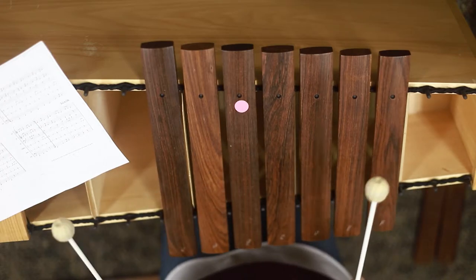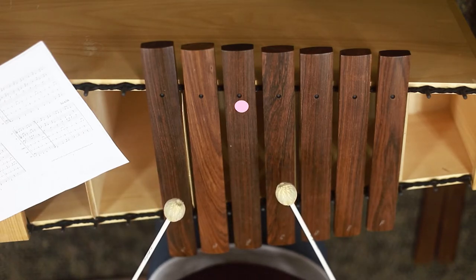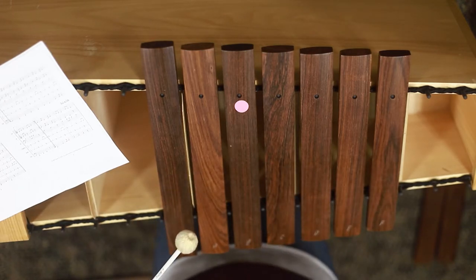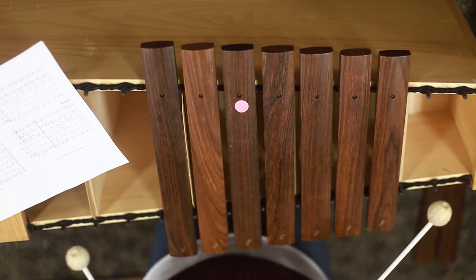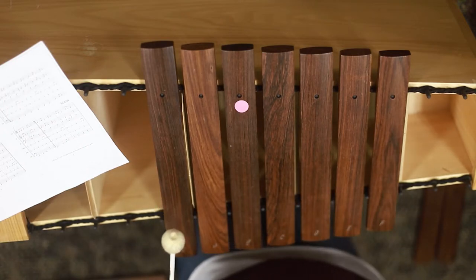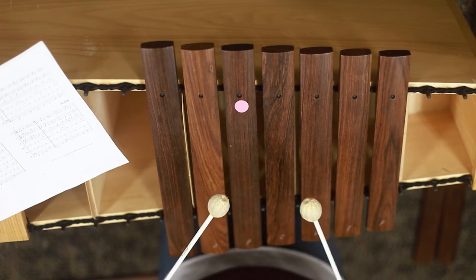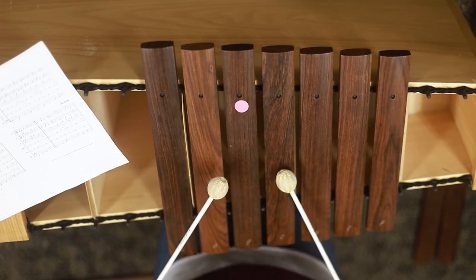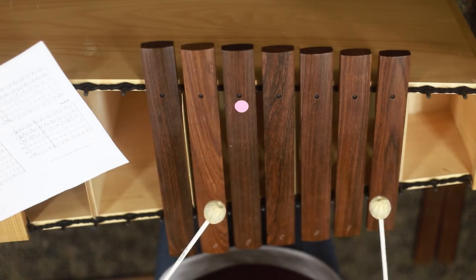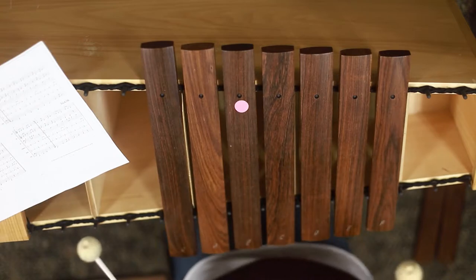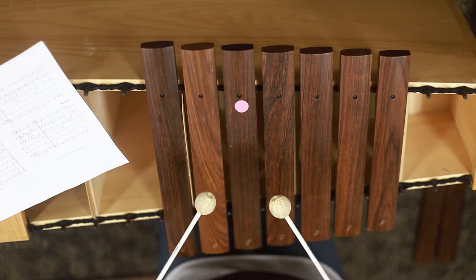And then the third bar is the same as the first bar. And then the fourth bar is a little bit different, it's closer to the second bar, but it's going to go up higher, and then come down in a scale. So it's going to sound... So the entire first section of A is going to sound like this.